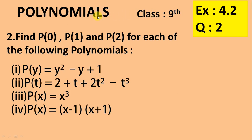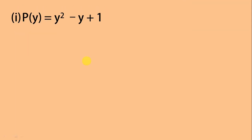In today's class we will solve polynomials — 9th class, exercise 4.2, question number 2: find p(0), p(1), and p(2) for each of the following polynomials. We solve it step by step to get the correct answer. In the last class we solved exercise 4.2 question number 1; the link is in the description. You can also watch it by clicking the upper right corner.